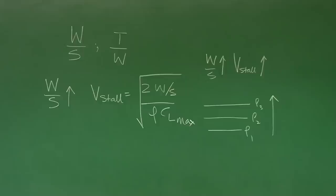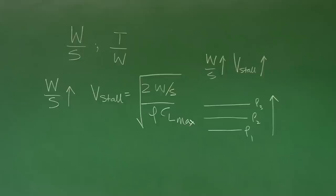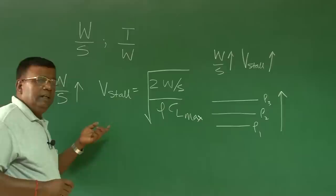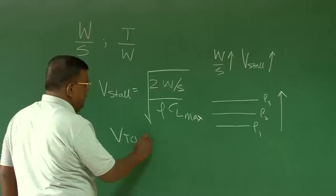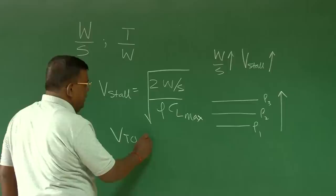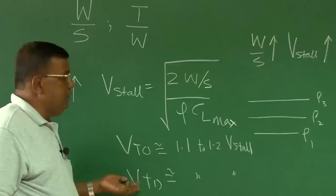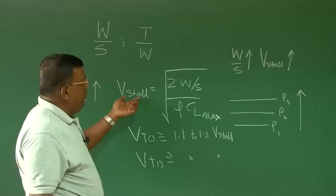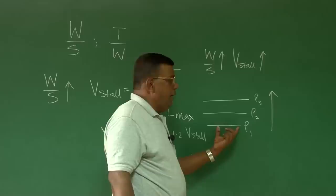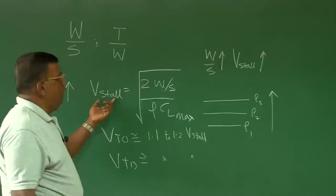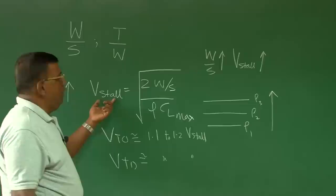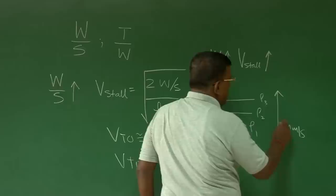V_stall by definition is the minimum speed at which you can fly such that lift equals weight. When we talk about V_takeoff or V_landing, we design such that it is between 1.1 to 1.2 times V_stall. Similarly, V_touchdown is of the same order. Therefore, as V_stall increases, V_takeoff and V_touchdown will also increase. For example, if taking off at sea level, V_stall may be 40 m/s, but at higher altitude it may become 50, or further up, 60 m/s.